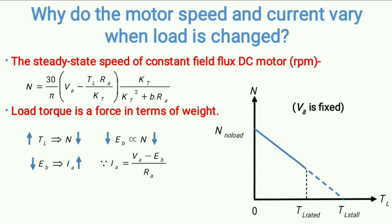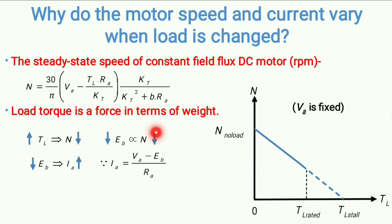So the conclusion is: if load torque increases, armature current also increases — the motor draws more and more current. Similarly, if load torque is reduced, speed increases. If speed increases, back EMF increases. If back EMF increases, armature current decreases, meaning the motor draws lesser current at lesser load.